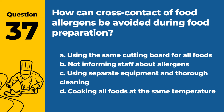Question 37. How can cross-contact of food allergens be avoided during food preparation? a. Using the same cutting board for all foods. b. Not informing staff about allergens. c. Using separate equipment and thorough cleaning. d. Cooking all foods at the same temperature. Answer: c. Using separate equipment and thorough cleaning. This helps to prevent allergen cross-contact during food preparation.